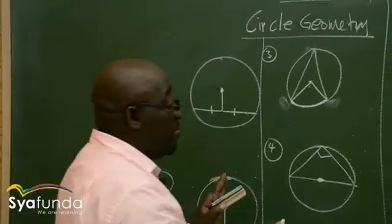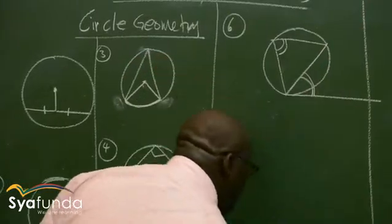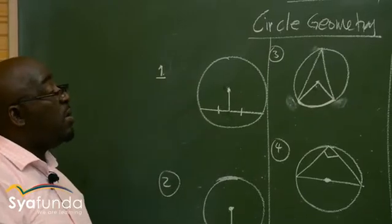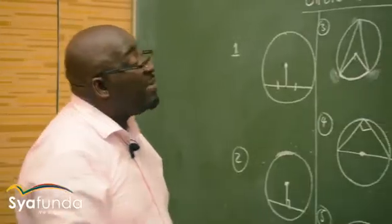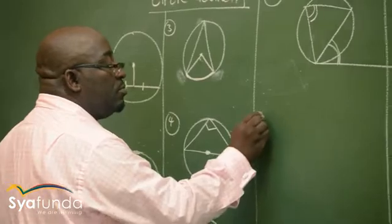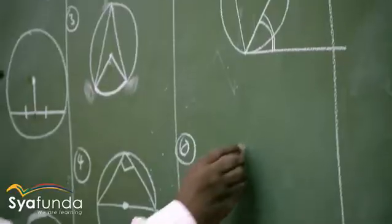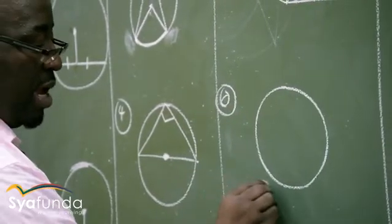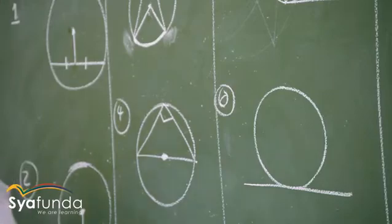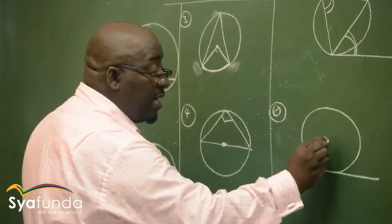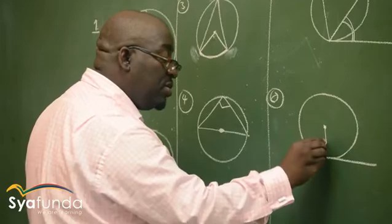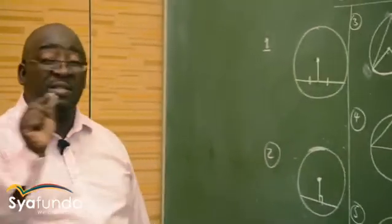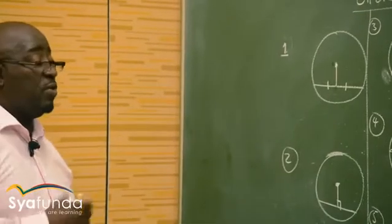The angle between a tangent and a chord is equal to the angle in the alternate segment — the other segment. Now, whenever we've got a circle and a tangent, and I draw a line from the center of the circle to the circumference — that line is called a radius. Something important is happening here: a radius meets a tangent.